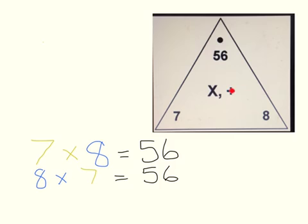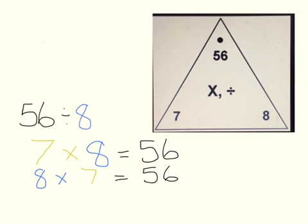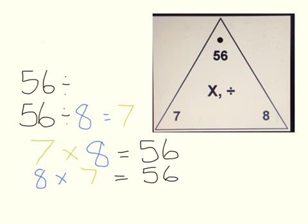Now that we have our multiplication number sentences, we can also do division number sentences. If we look at our three numbers, we know our largest number has to be our dividend — the number we're dividing — and our largest number is fifty-six. So if we take fifty-six divided by the divisor of eight, using our fact family card we get a quotient of seven. And if we go the other way — fifty-six as the dividend divided by the divisor of seven — our answer equals eight.